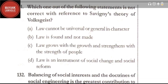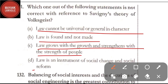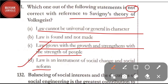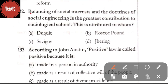Question number 131: which statement is not correct with reference to Savigny's theory of Volksgeist — option A: law cannot be universal or general in character; option B: law is found and not made; option C: law grows with the growth and strengthens with the strength of the people; option D: law is an instrument of social change and social reform. The correct answer is option D — 'law is an instrument of social change and social reform' is not correct in Savigny's theory, whereas options A, B, and C are correct.